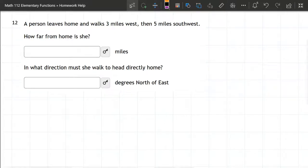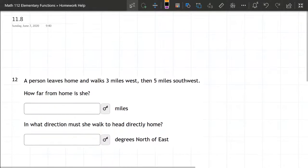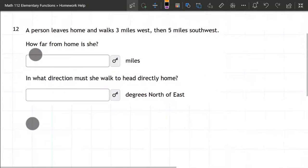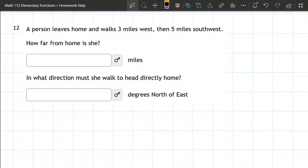Here we have a vector question from section 11.8. A person leaves home and walks three miles west, then five miles southwest. We're asked how far from home is she, which is the magnitude or distance, and in what direction must she walk to head directly home, measured in degrees north of east.